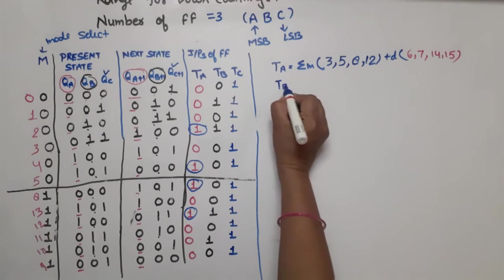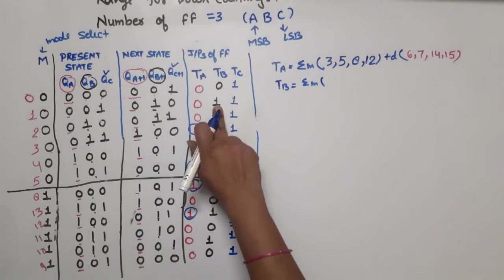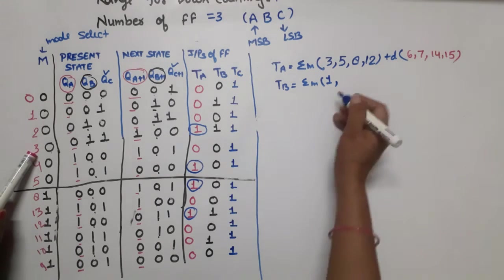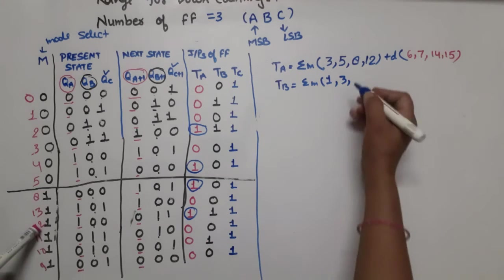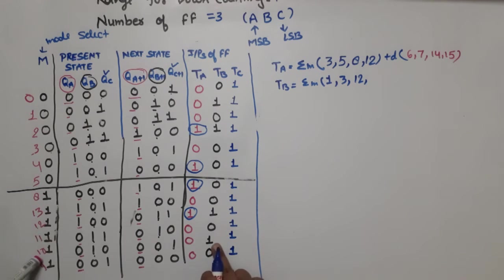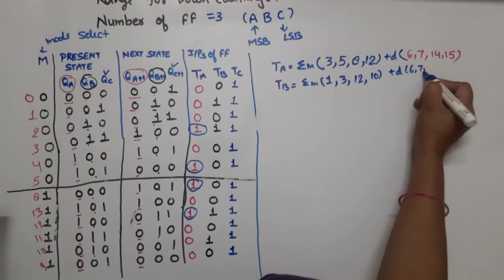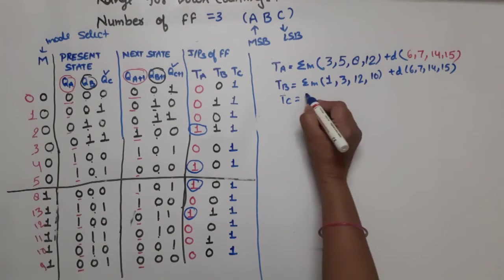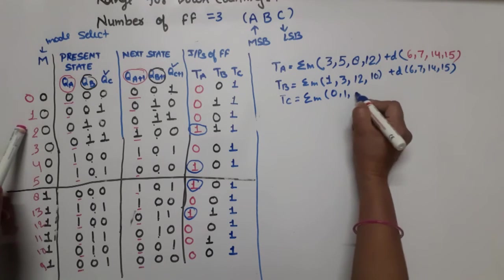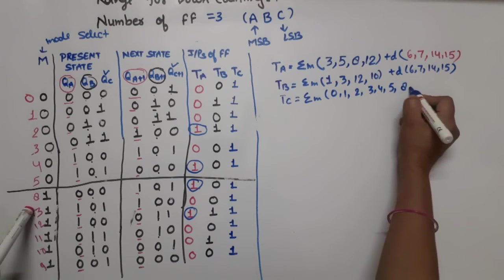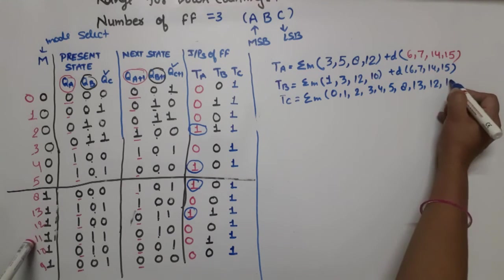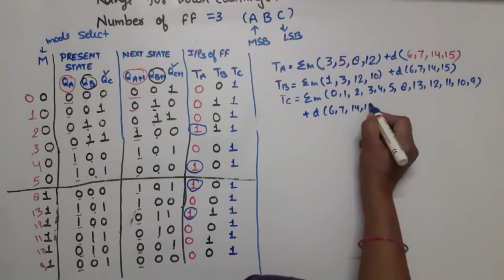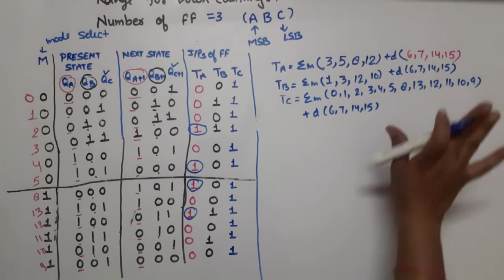From the K-map simplification for TB, we get three product terms: M-bar · QA-bar · QC, plus M · QA · QC-bar, plus M · QB · QC-bar. For TC, since almost all minterms are 1 and the don't cares help cover everything, TC simplifies to 1. Now we have all three equations needed to build the circuit.